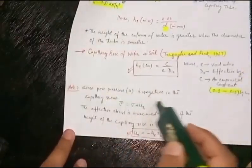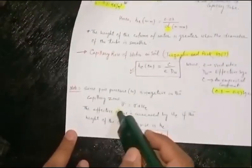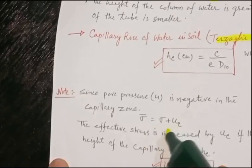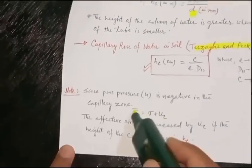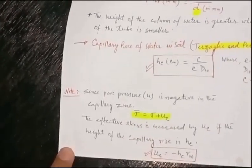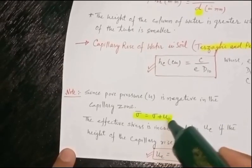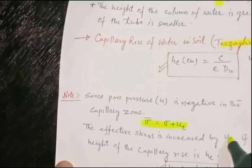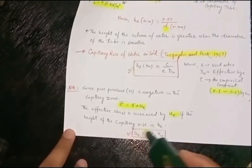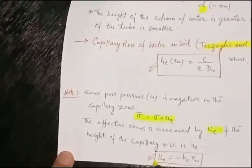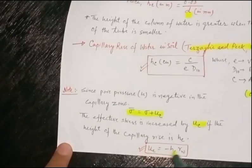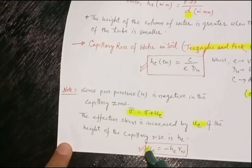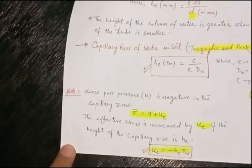Since pore pressure is negative in the capillary zone, effective stress equals total stress plus pore pressure. The effective stress increases by the pore pressure. If the height of capillary rise is hc, then the pore pressure uc = -hc × γw.